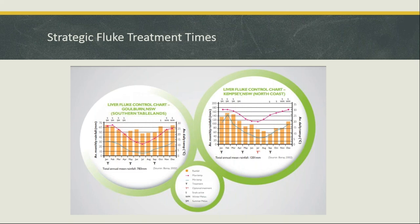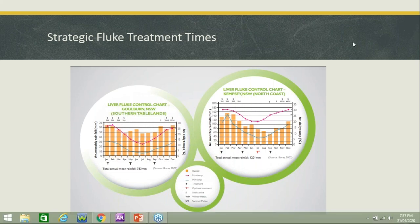Back to David for questions. The first question is: how can you control the snail if fencing isn't an option? Tim answers: it's very hard unless you can drain the areas. If you can't fence the wet areas out, there's really no good way to stop the snail — the only way is by restricting grazing of animals in that area.